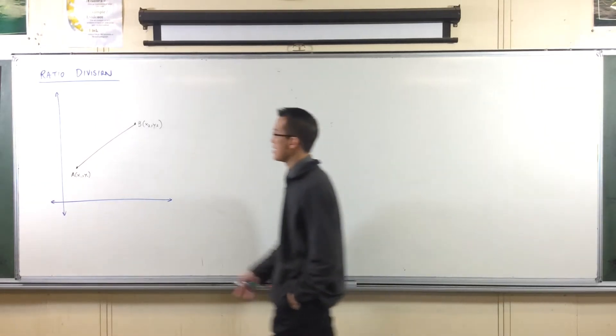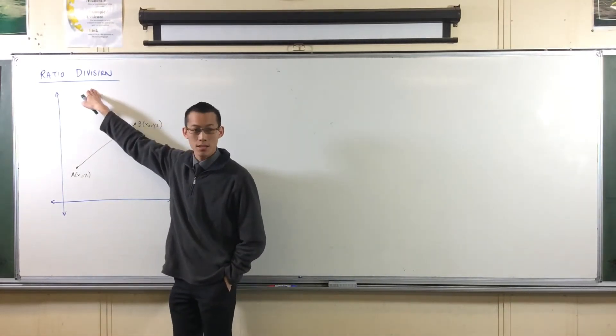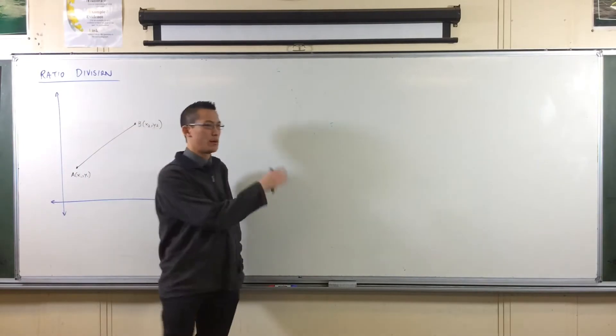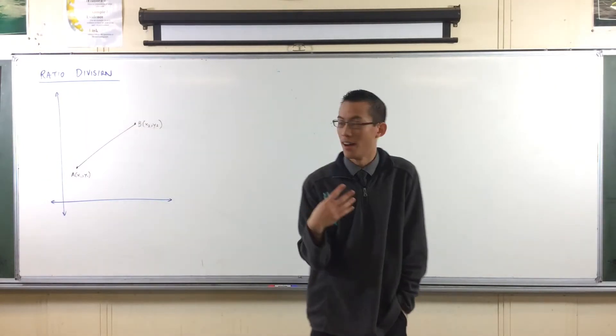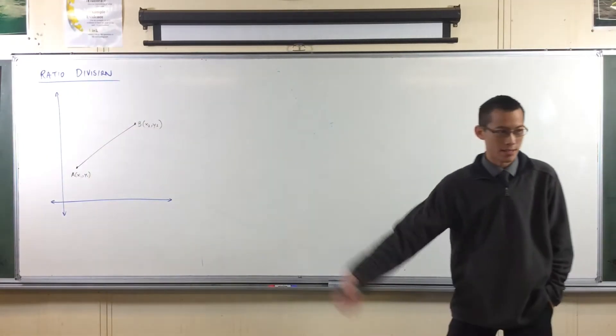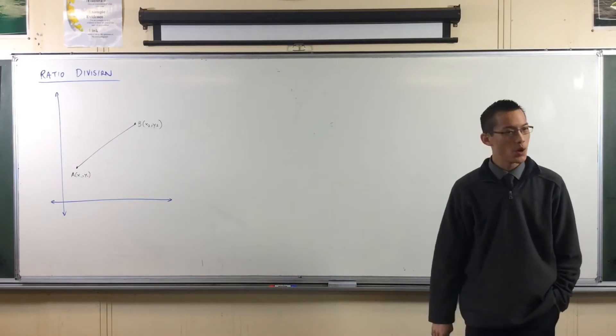Ratio division, as the name implies, is about dividing something in a particular ratio. And when we're talking about something in linear functions, it's an interval. So here's an interval, AB.